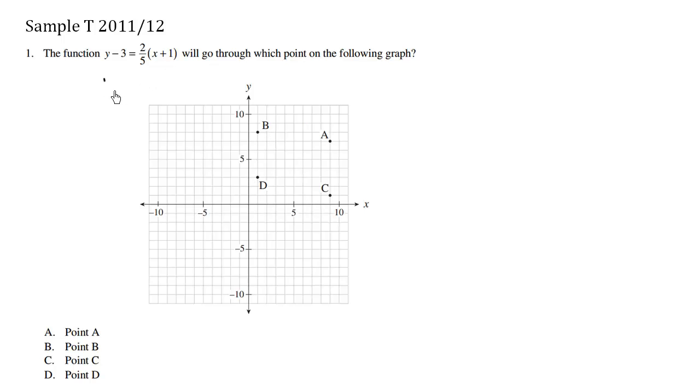Now if I rewrite this equation as y minus 3 equals 2 fifths x, I'm going to distribute here, plus 2 fifths. I can simply add 3 to both sides and we have plus 3.